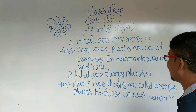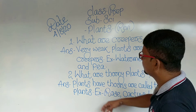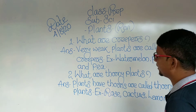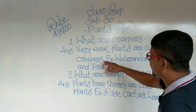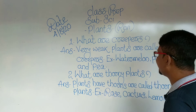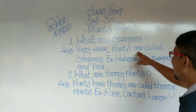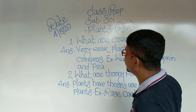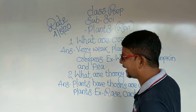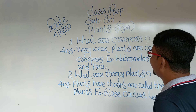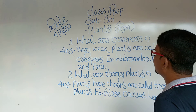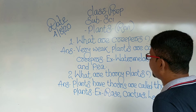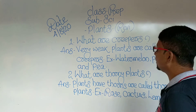Example: watermelon, pumpkin, and pea. Spelling: V-E-R-Y, very. W-E-A-K, weak. P-L-A-N-T-S, plants. C-A-L-L-E-D, called. Creepers. Very weak plants are called creepers. Example: watermelon, pumpkin, and pea.